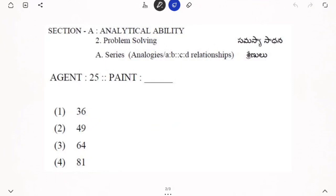What is given here? Paint. Agent is corresponding to 25. Then paint should be corresponding to what? Agent is giving us 25. Then paint is what? We have to apply here again the same numbers logic.